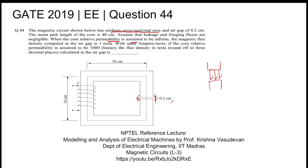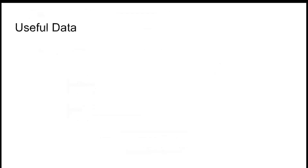The flux density computed in the air gap is 1 tesla when the core relative permeability is infinite. Now, with the same ampere-turns as in the previous case, if the core relative permeability is made 1000 and linear (non-linearity not considered), the flux density in tesla in the air gap is being asked. To solve this, you need to know about magnetic circuits.